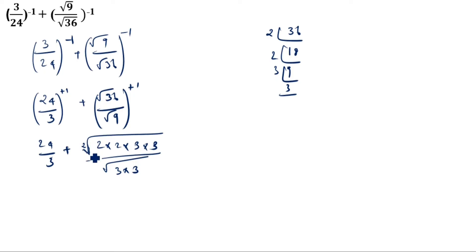For square root, if nothing is given, you consider it as 2. Root means you have to take pairs: 2, 2. So you have to pair - one 2 you take outside, one 2 you take outside - so 2×3 divided by 3.